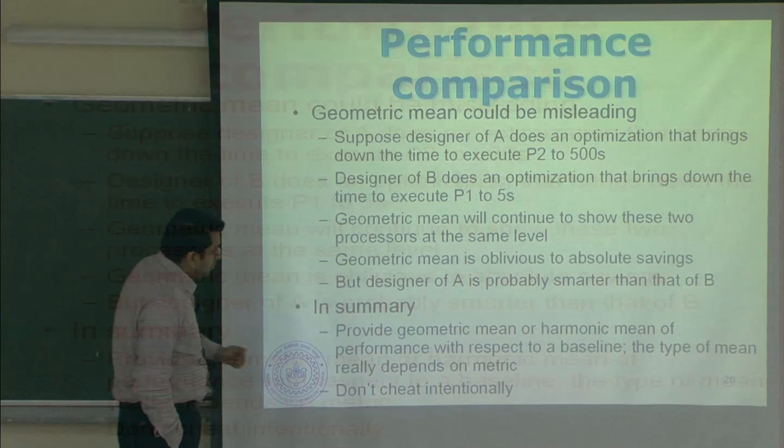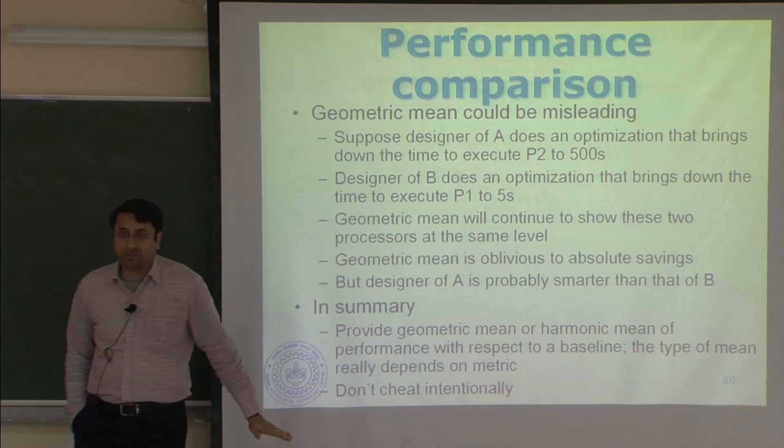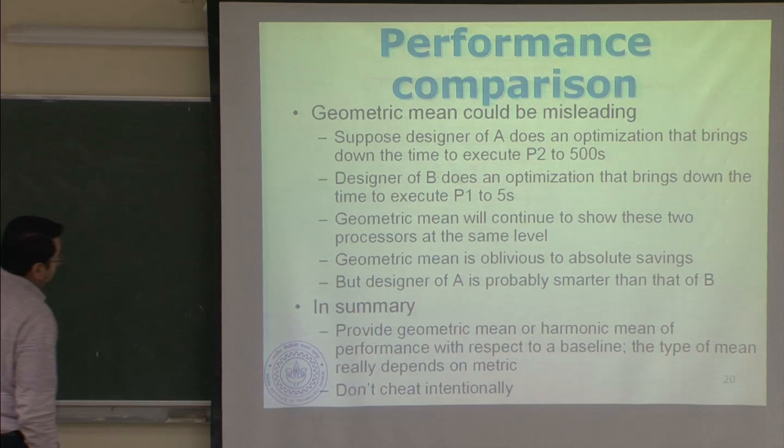In summary, provide the geometric mean or harmonic mean of performance with respect to a baseline. The type of mean really depends on the metric. The most important point is: don't cheat. Geometric mean is often used when you are dealing with ratios.